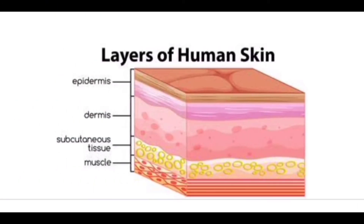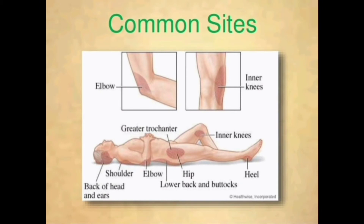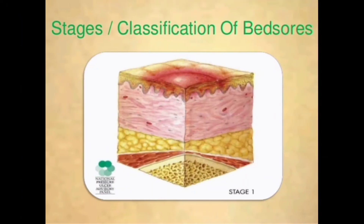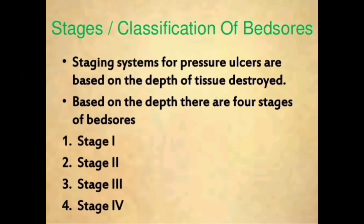There are four layers of skin: the epidermis, dermis, hypodermis or subcutaneous tissue, and muscle. The common sites of bed sores are the back of the head and ears, shoulder, elbow, lower back, buttocks, hip, heel, inner knees, and greater trochanter.